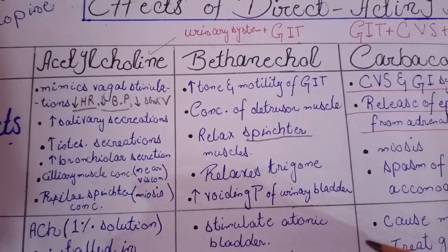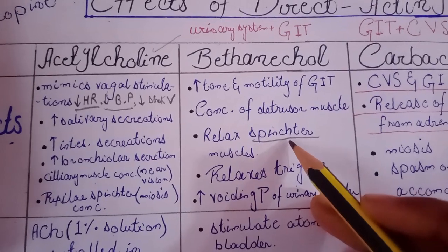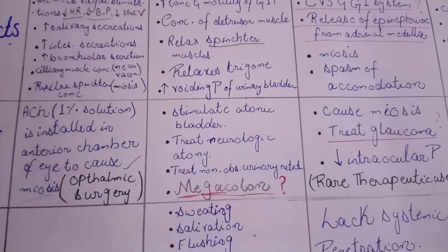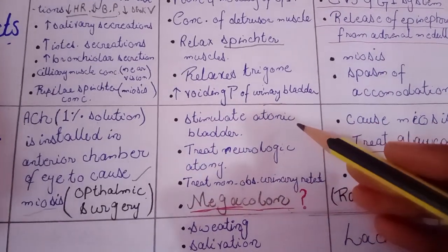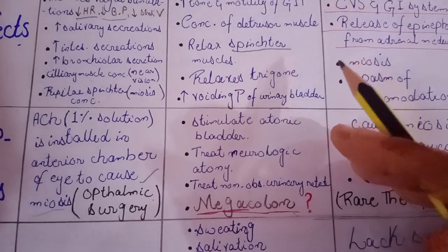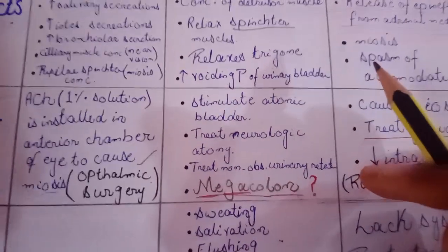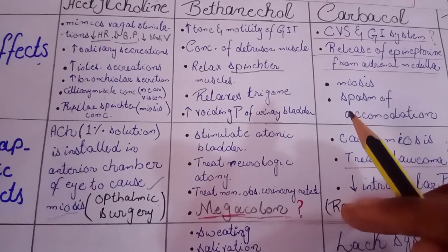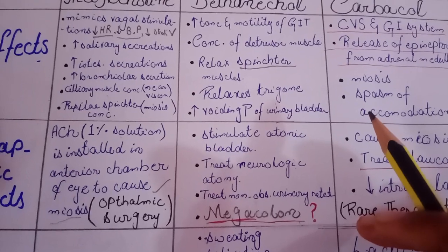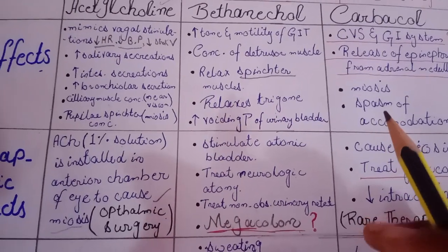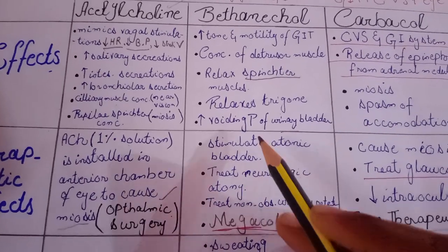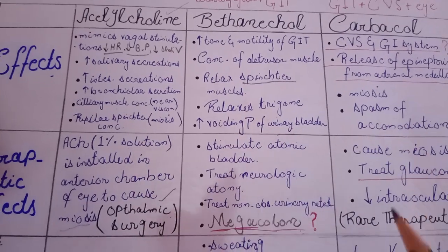So, what bethanechol does is relax the urinary sphincters, which increases the voiding pressure of the urinary bladder. For these purposes, bethanechol is used in the case of atonic bladder, neurogenic atonic bladder, and non-obstructive urinary retention. In these diseases, the sensory nerve supply between the brain and the urinary bladder is interrupted, which means that the urinary process is not possible. Therefore, bethanechol is used so that it can increase the voiding pressure of the urinary bladder and hence result in urination.